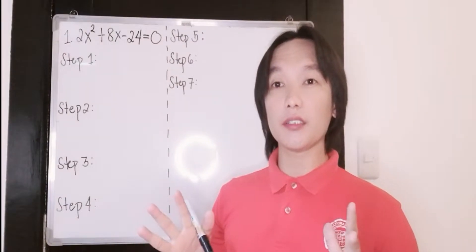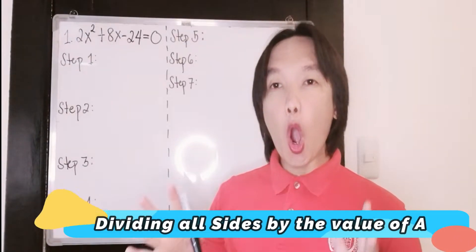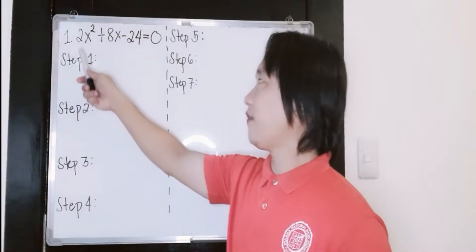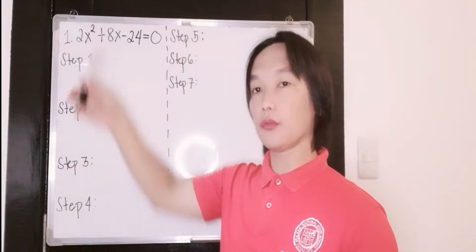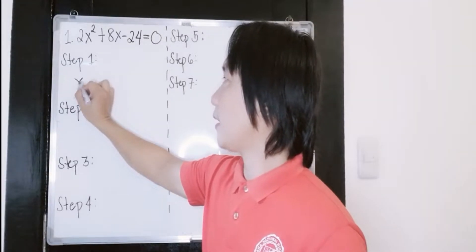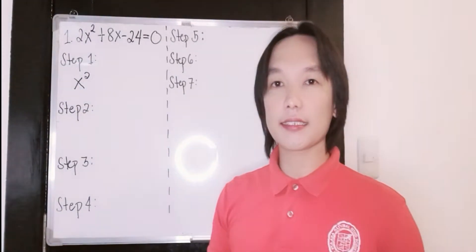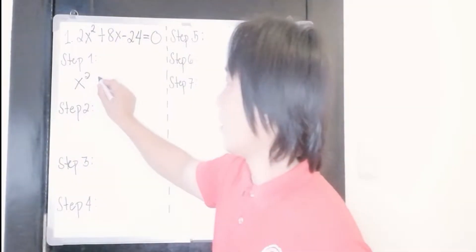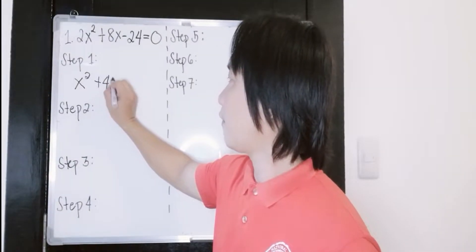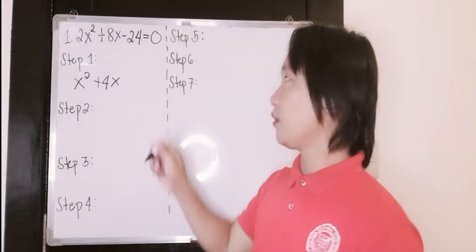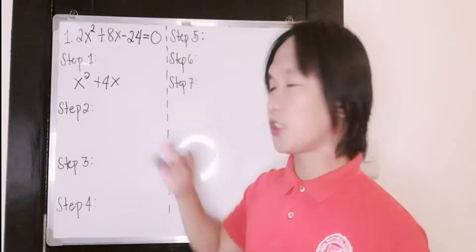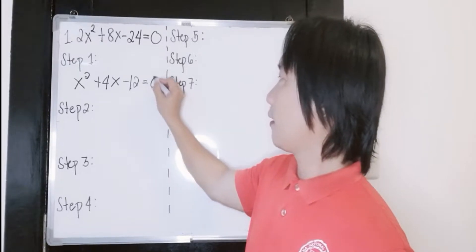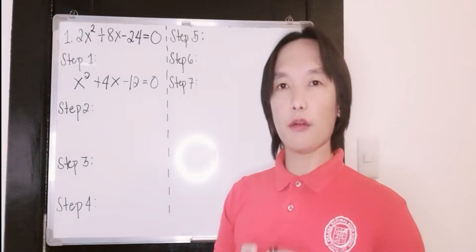How are we going to do that? By dividing all the sides by positive 2. So if you divide 2 divided by 2, the answer is 1, or simply x squared. If you divide positive 8 by 2, the answer is plus 4x. And if you divide negative 24 by 2, the answer is negative 12, then copy 0. So that is your first step.